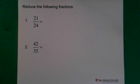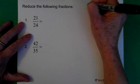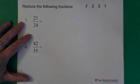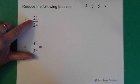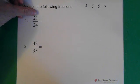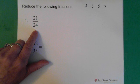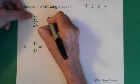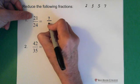Let's try some here. Twenty-one divided by twenty-four — thinking about our prime numbers: two, three, five, maybe seven. Also noticing the digits: two plus one is three, two plus four is six. So these numbers are both divisible by three. Twenty-one divided by three is seven, and twenty-four divided by three is eight.